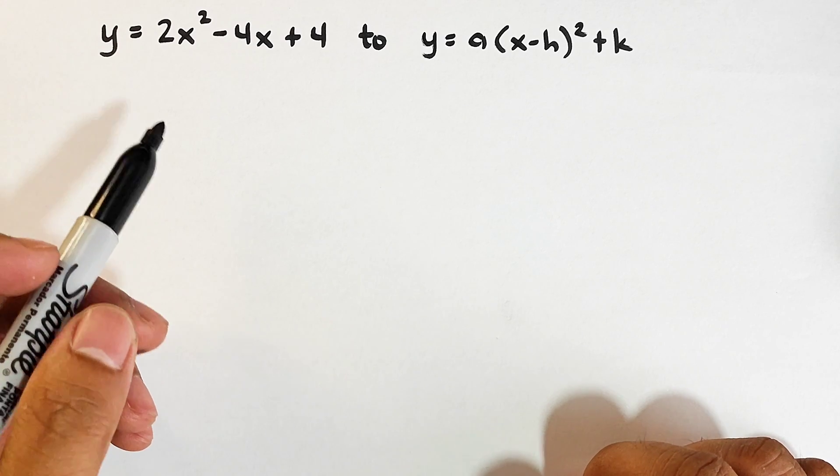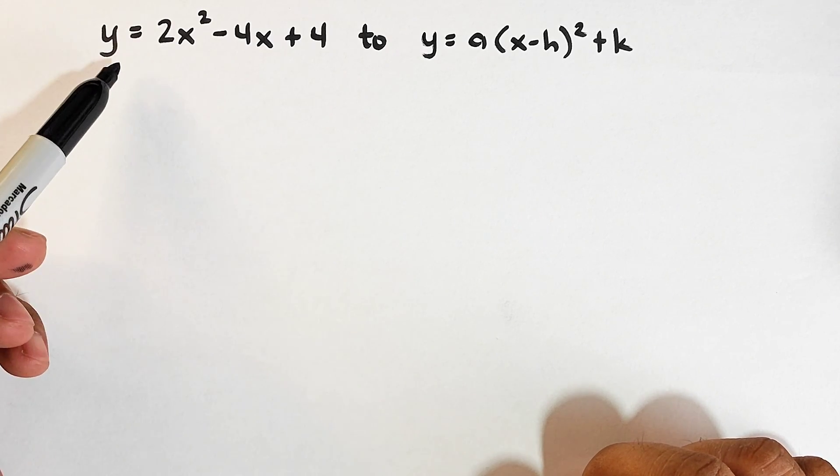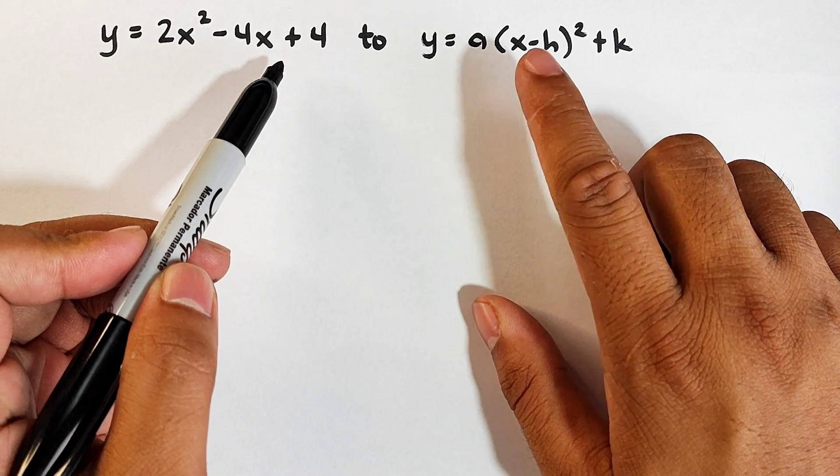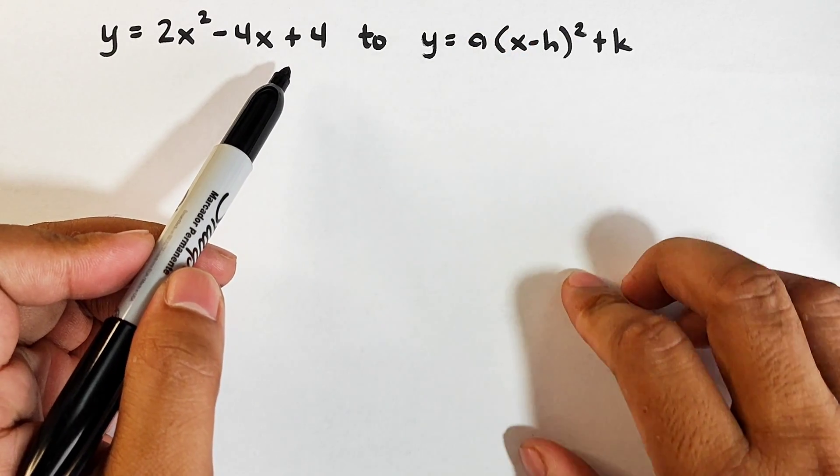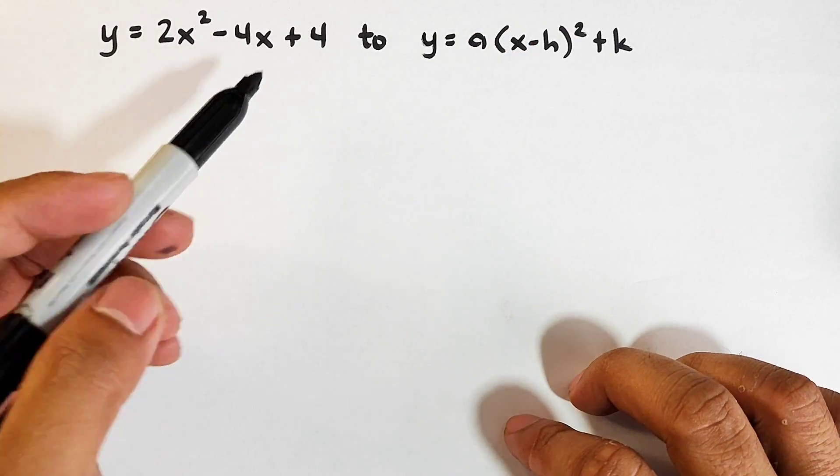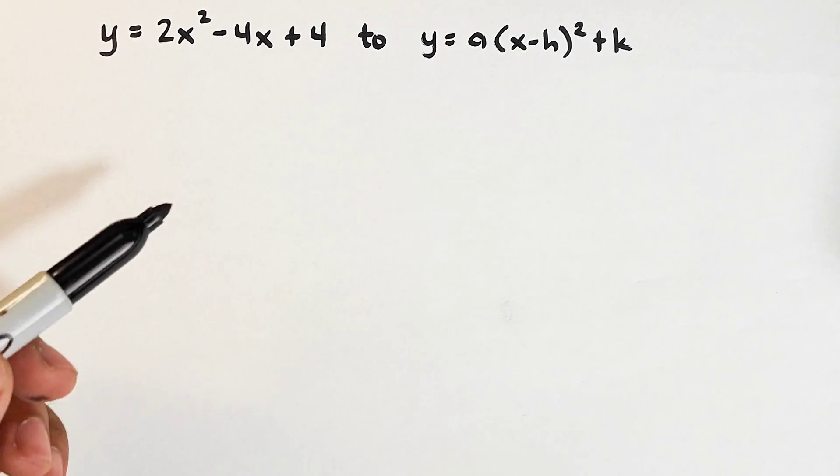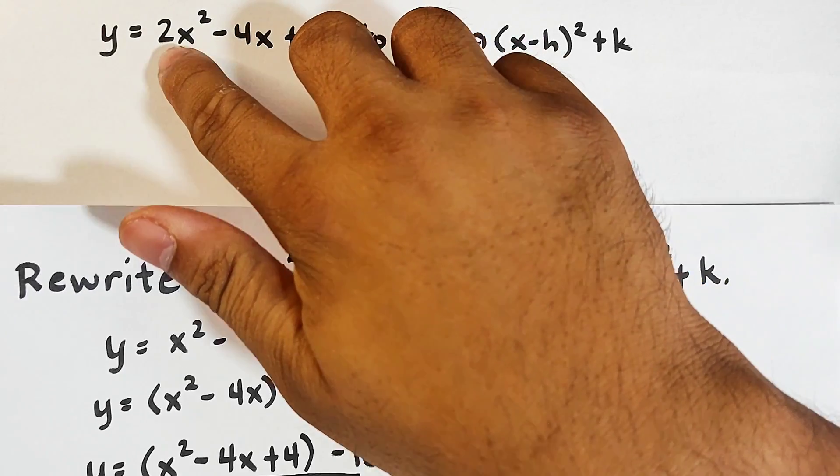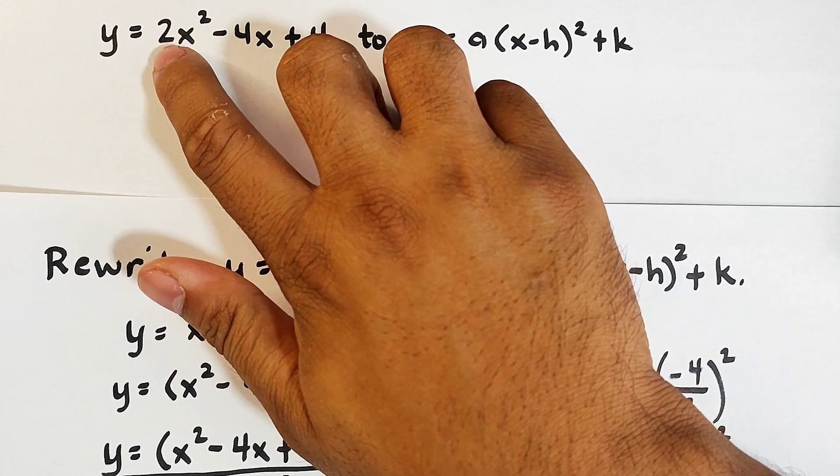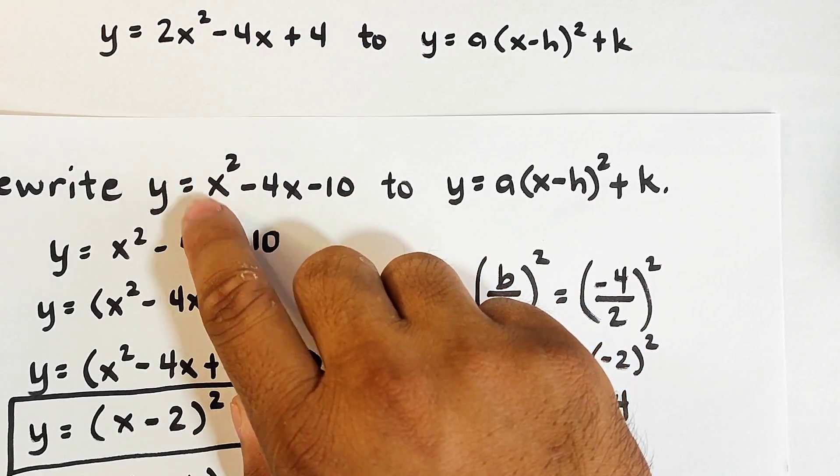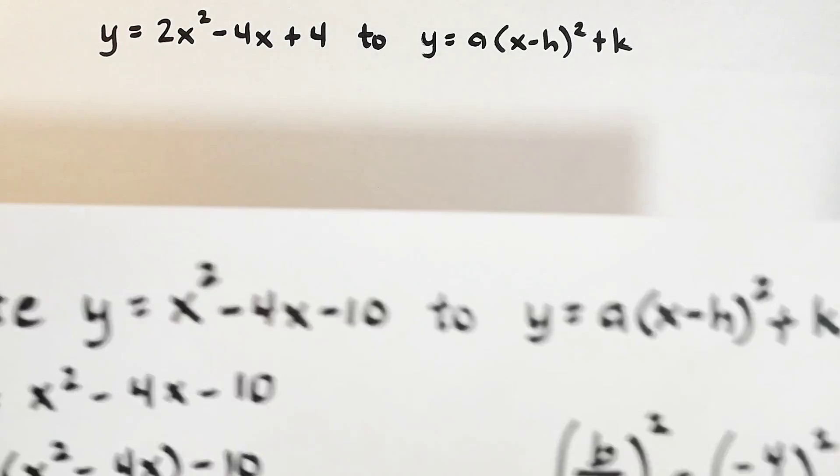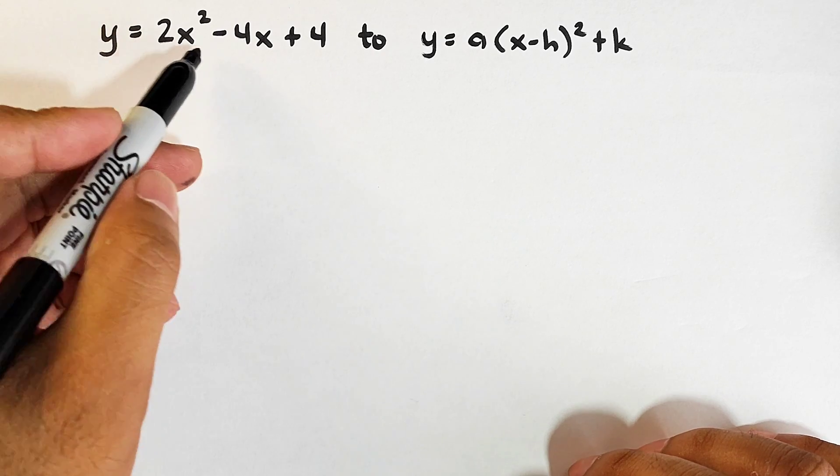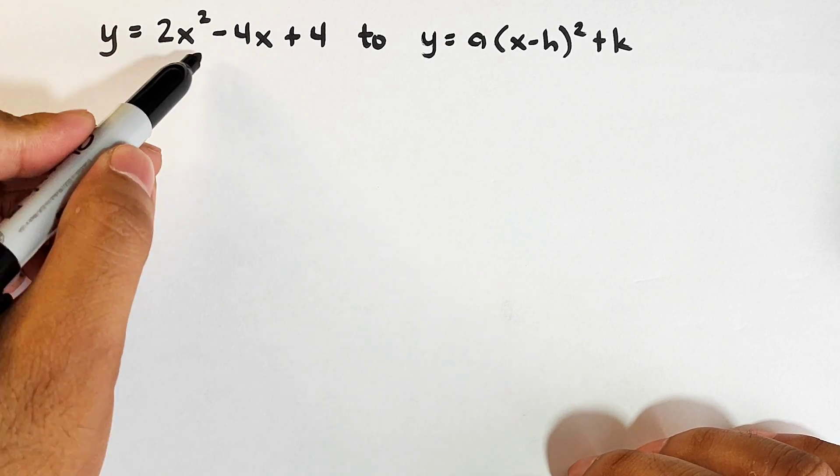Now let's move on with item number 2. We are asked here to convert y equals 2x squared minus 4x plus 4 to y equals A times x minus H squared plus K. Now, the difference here, the difference of this example from our previous example is that dito, the coefficient of the quadratic term is 2. Dito naman, we don't have, it's just 1 lang siya. So medyo may iba ng konting ating process. Pero halos yun din naman.